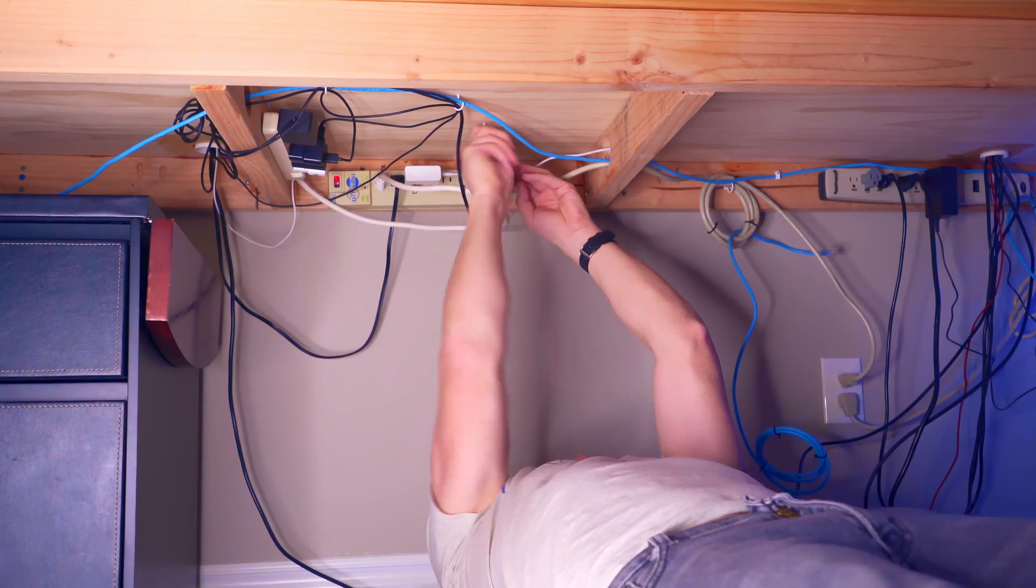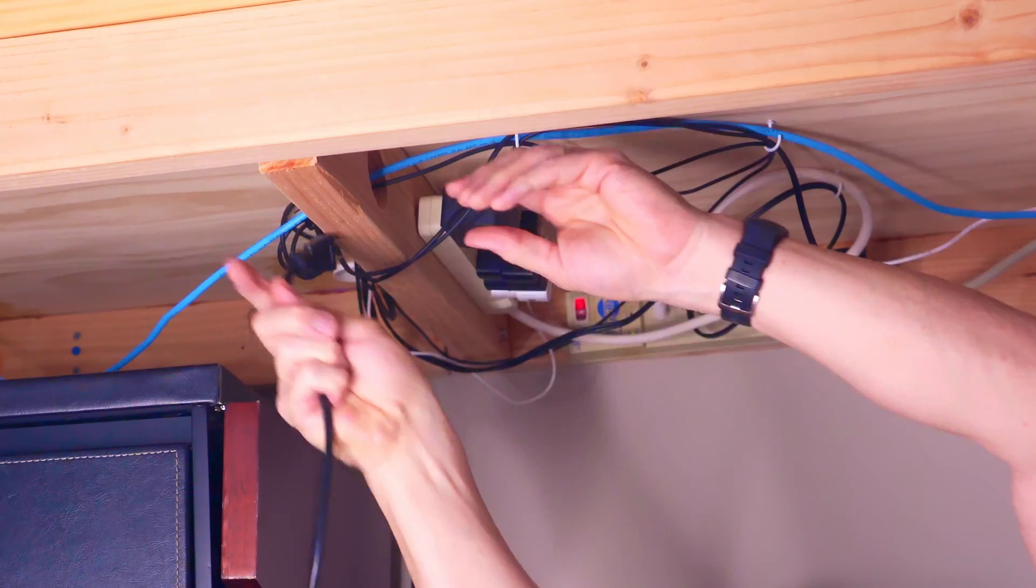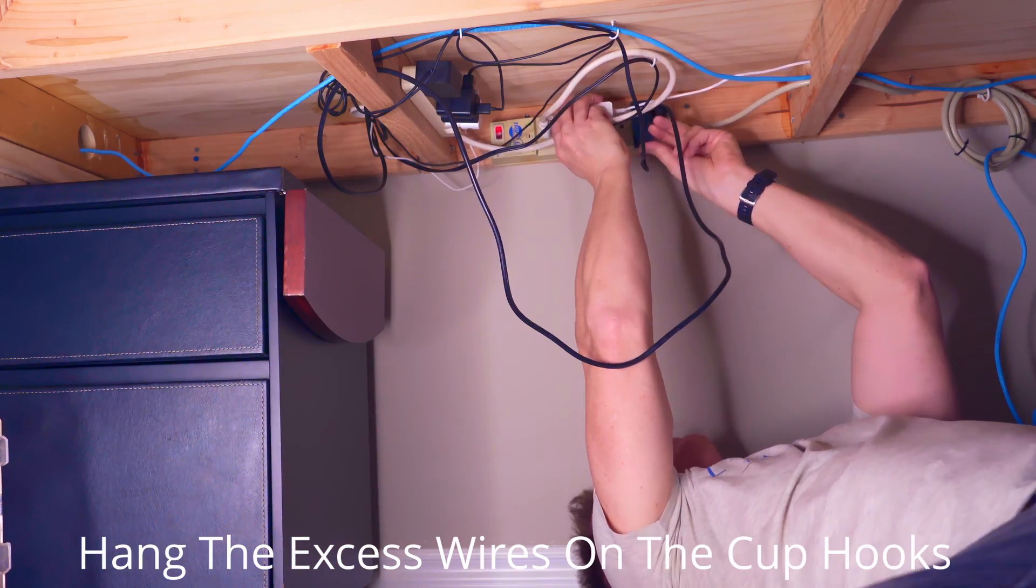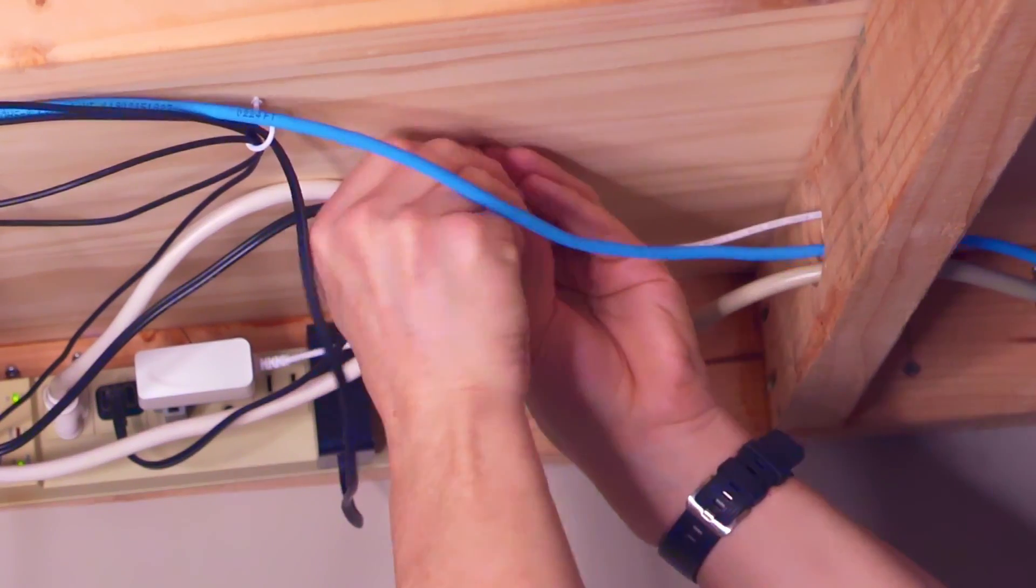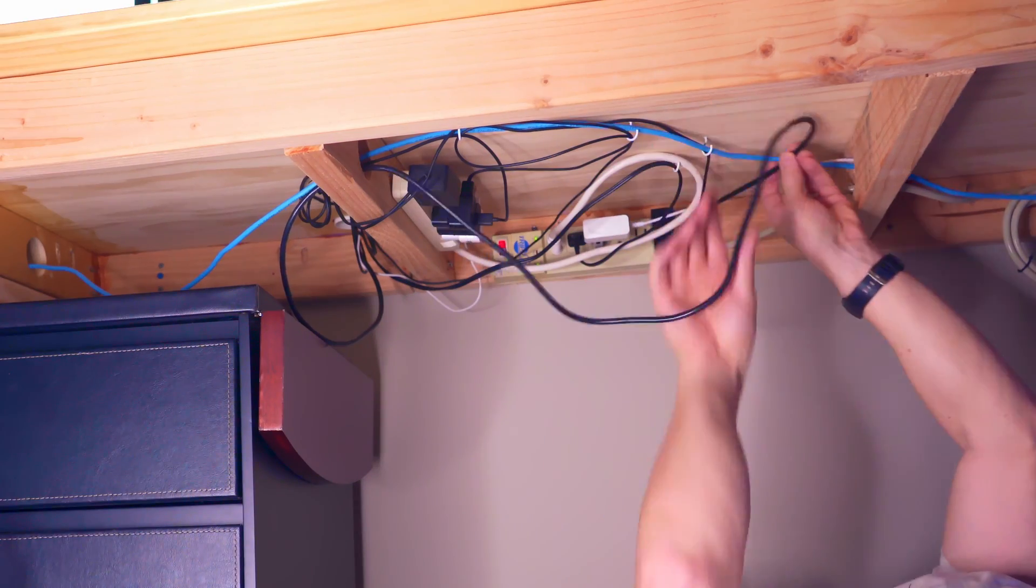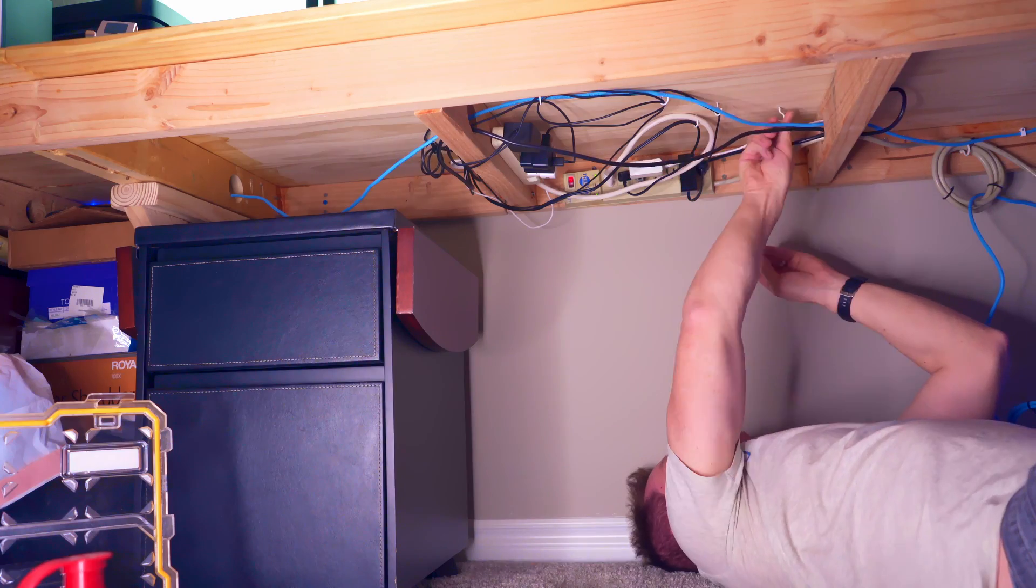If you have wires hanging under your desk, you can secure those wires with small cup hooks. All you have to do is drill a pilot hole and then screw in the cup hook. The great thing about these cup hooks is they can hold one wire, two wires, three, or maybe even four wires.